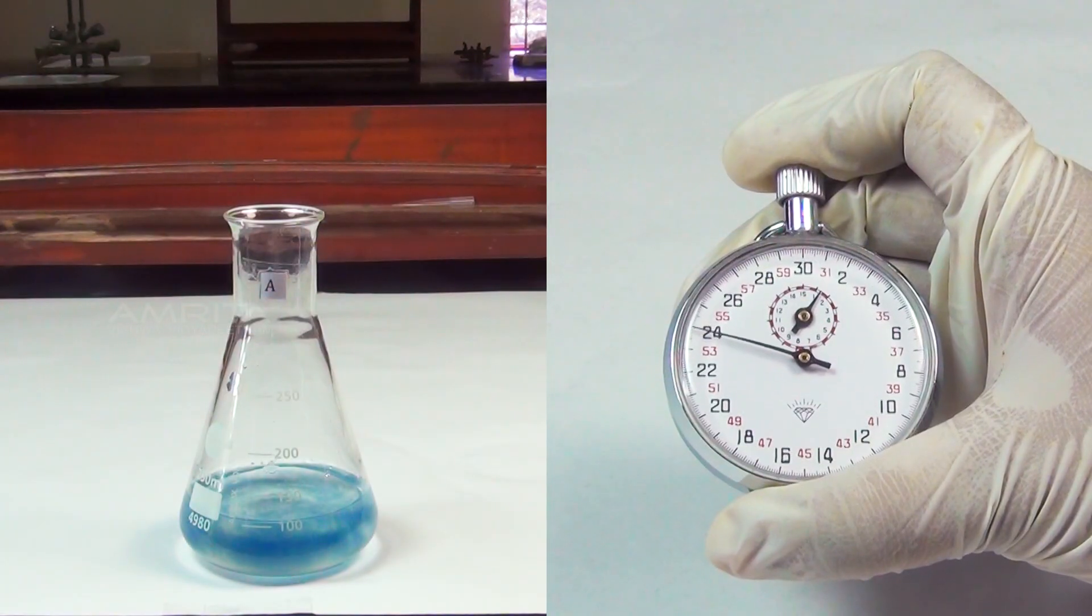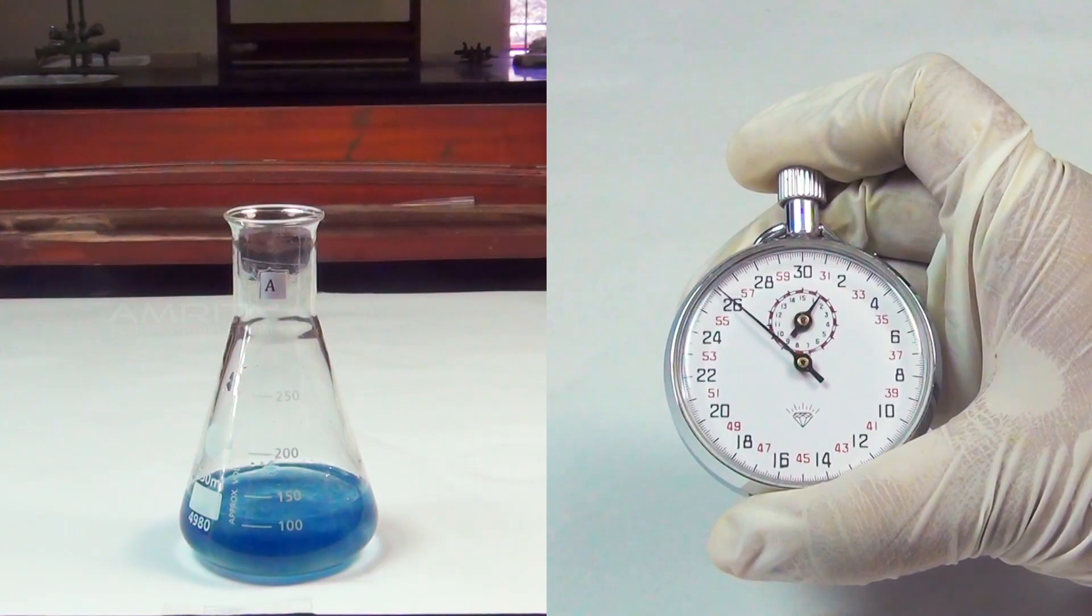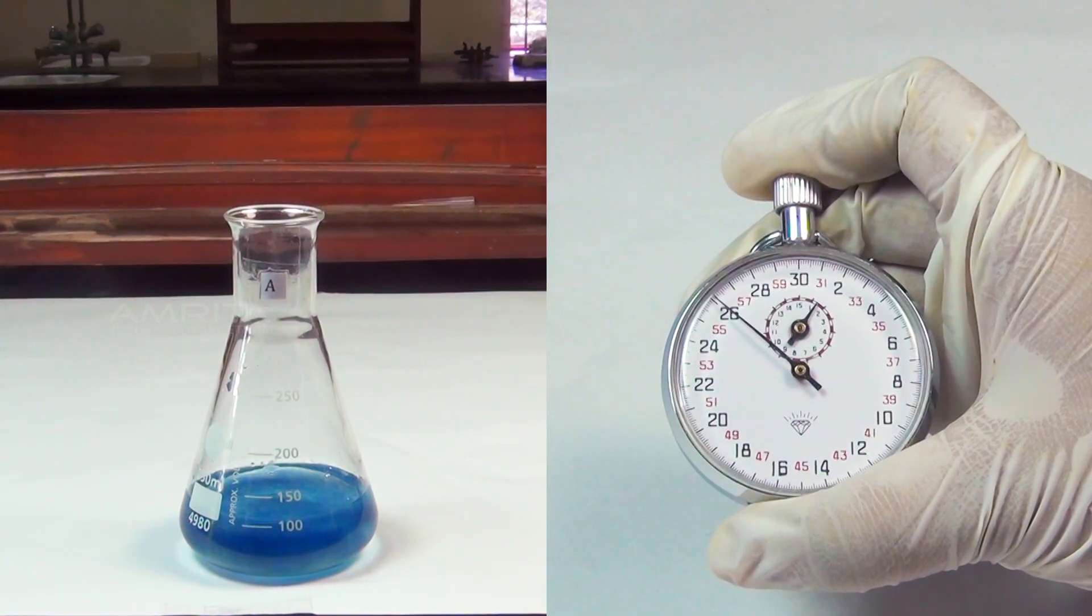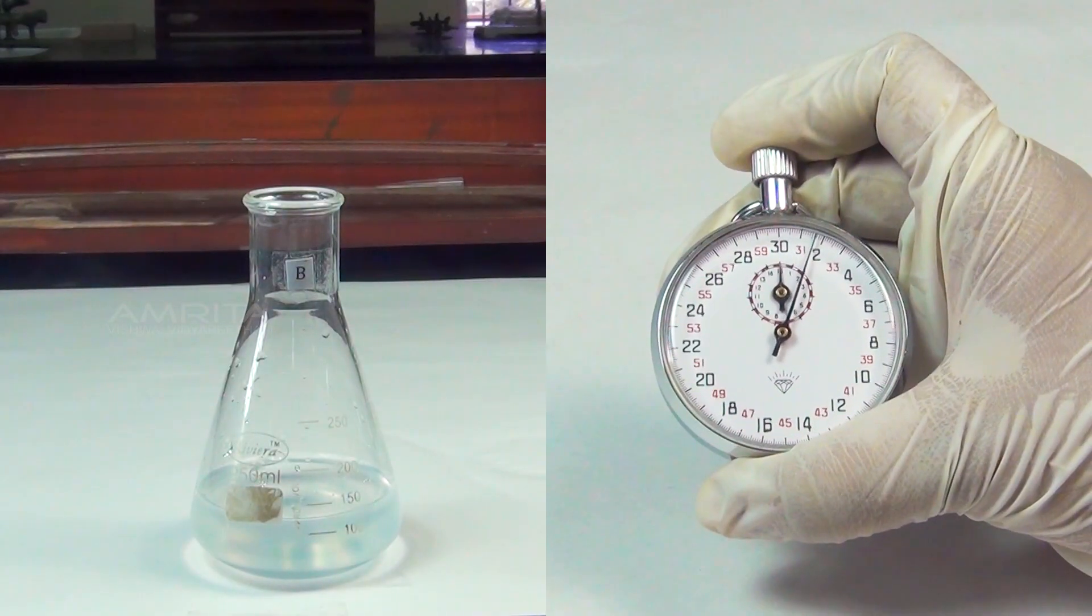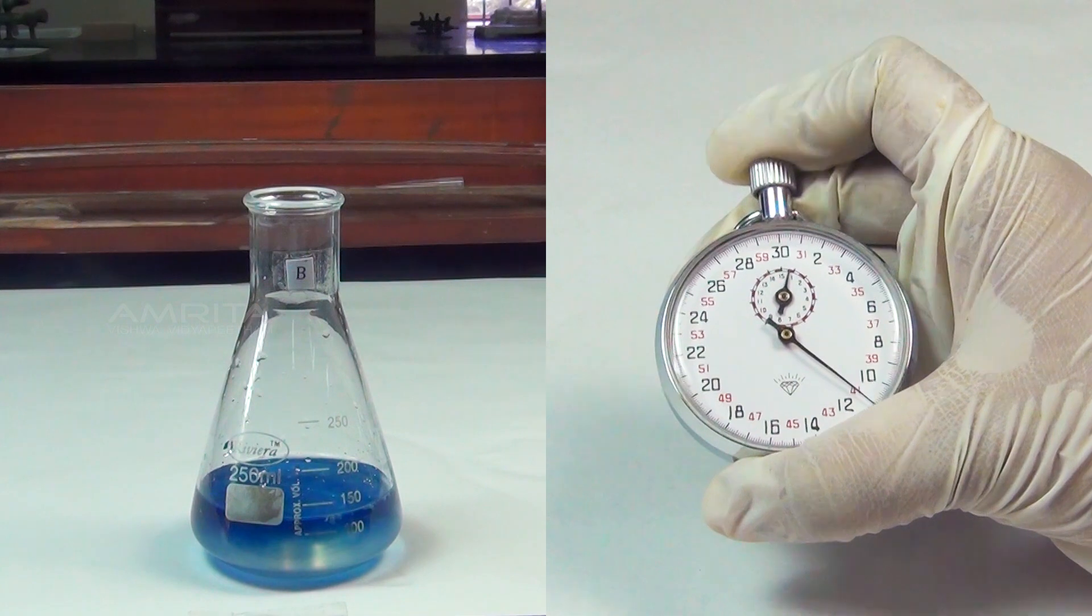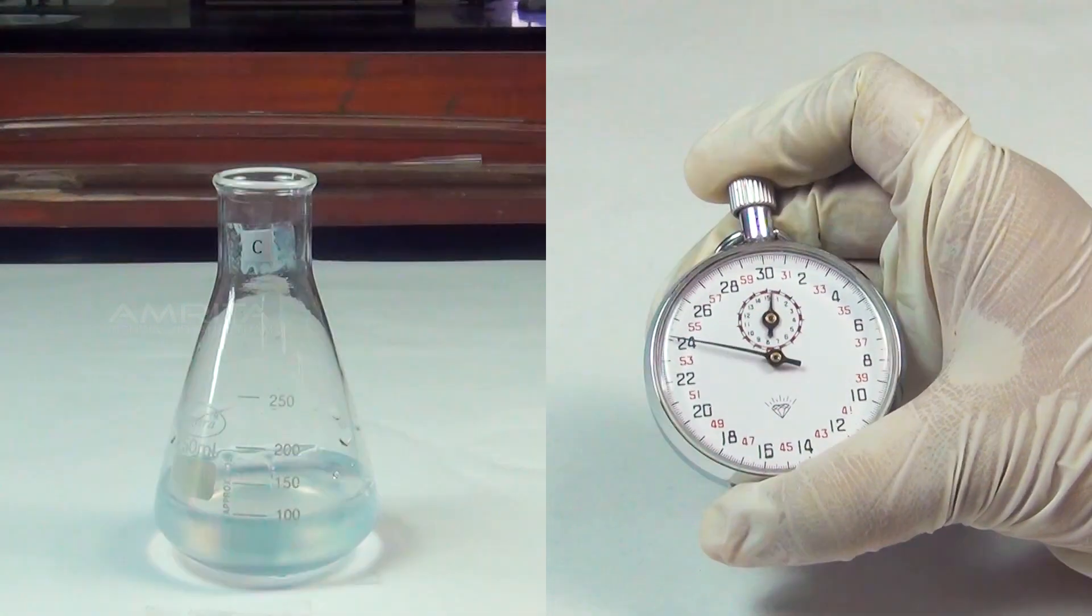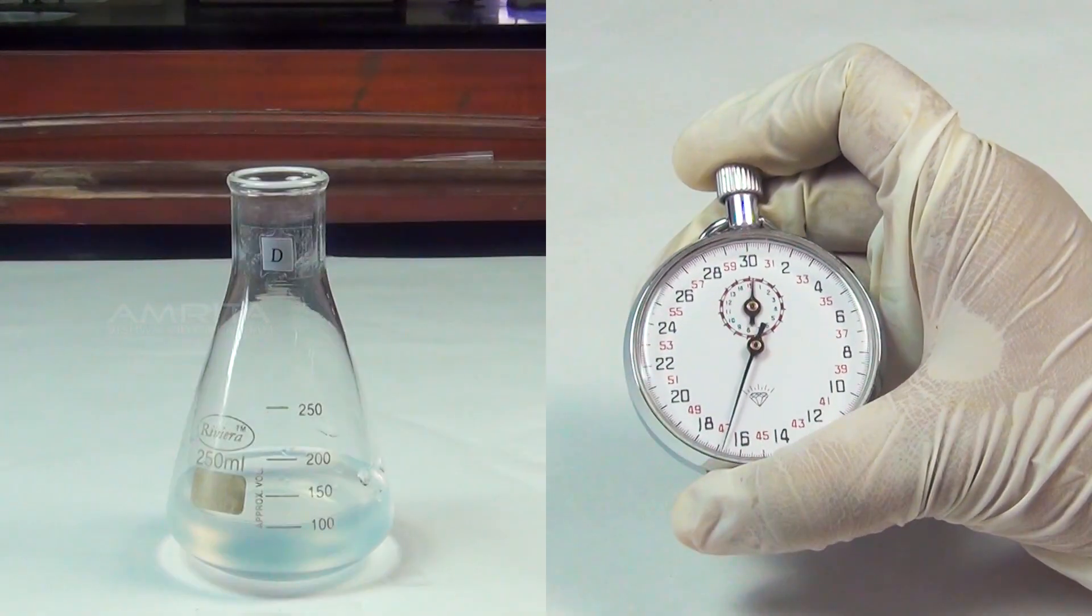Stop the stopwatch when the blue colour just appears and note down the time required for the appearance of blue colour. Repeat the experiment by adding 10 ml of 0.005 molar sodium sulphite solution to flasks B, C and D and note the time required in each case for the blue colour to appear.